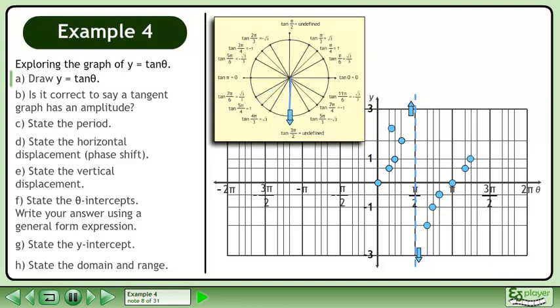Plot the values of tan theta from the third quadrant. We have another asymptote since tan theta is undefined. Finally, plot the values of tan theta from the fourth quadrant.